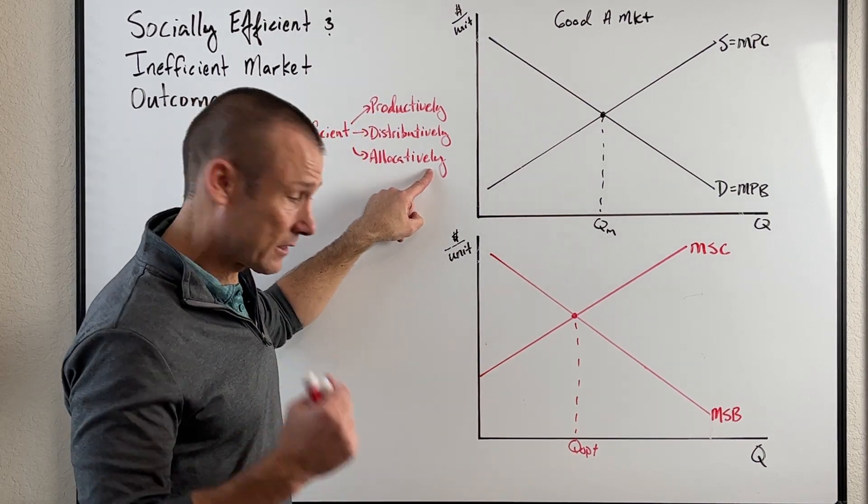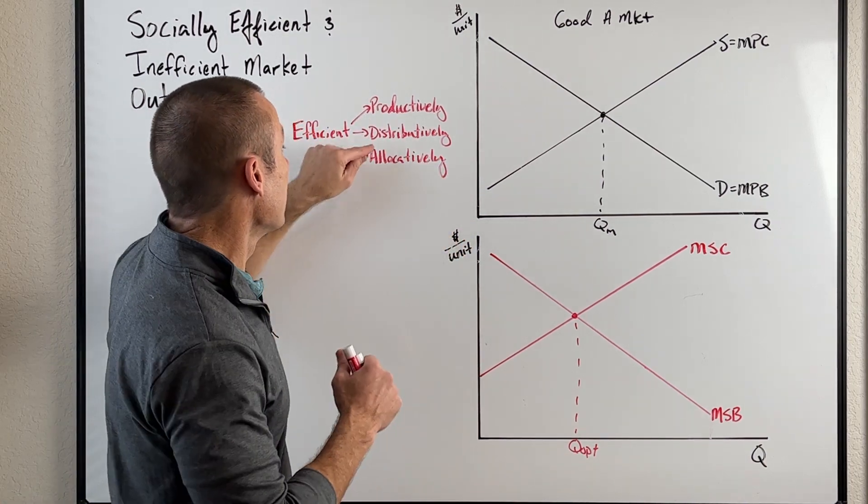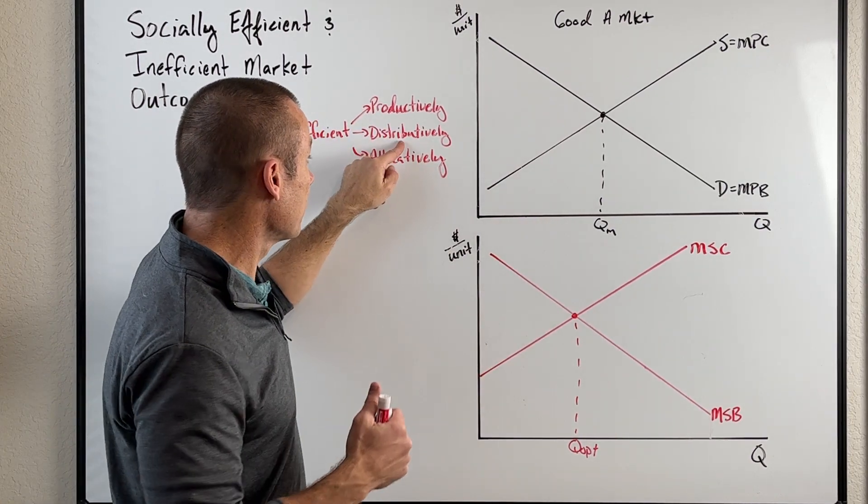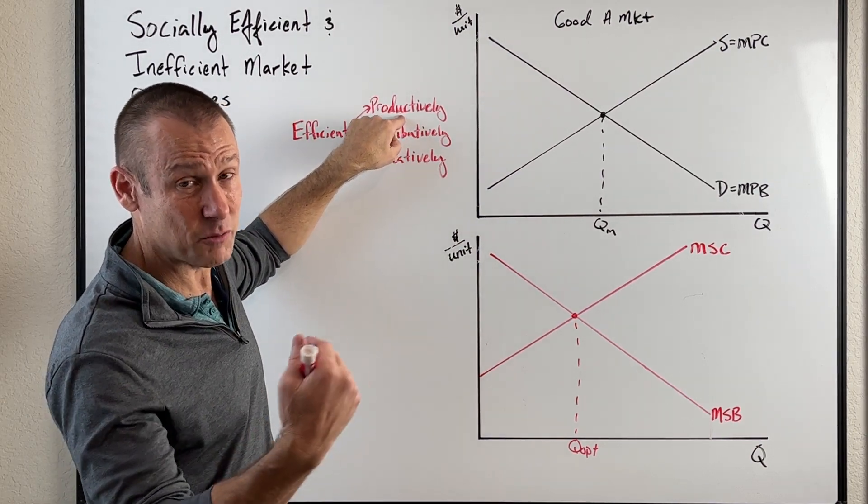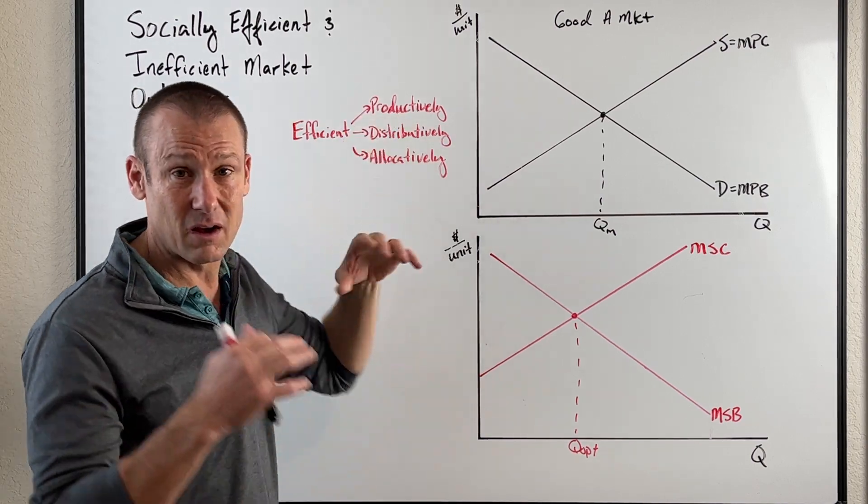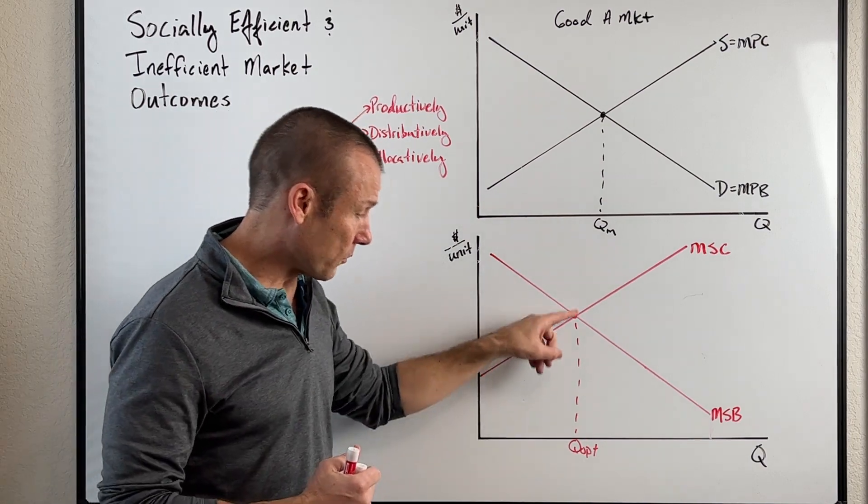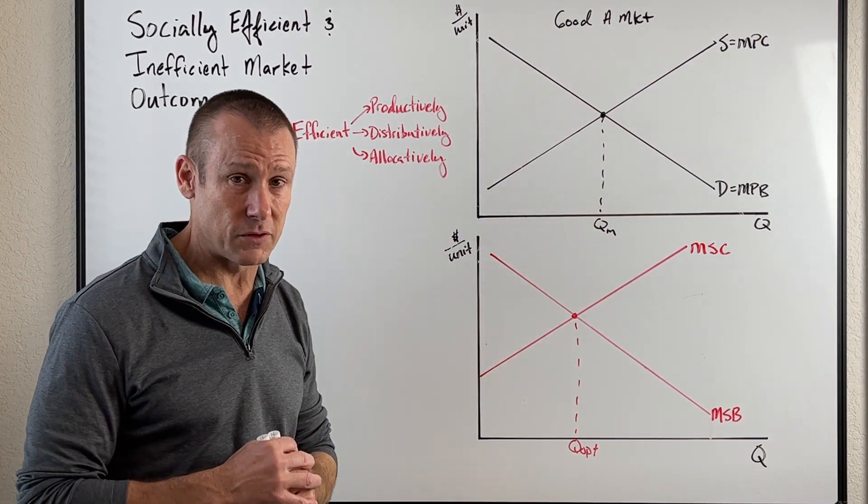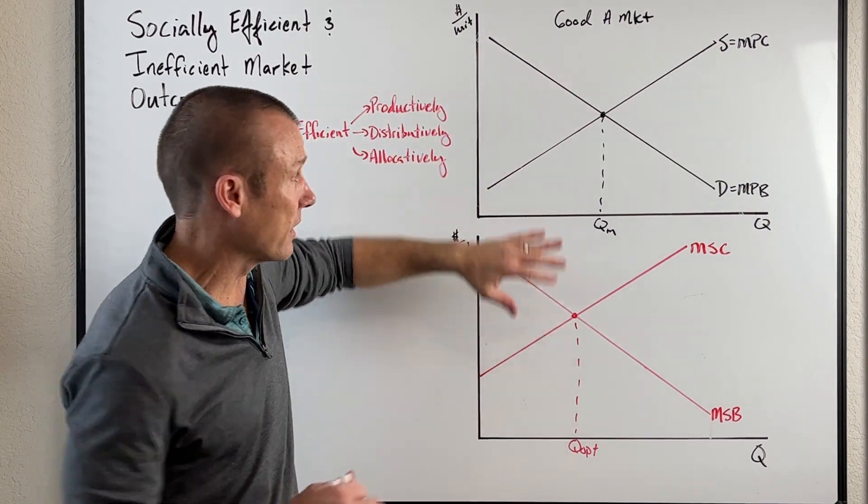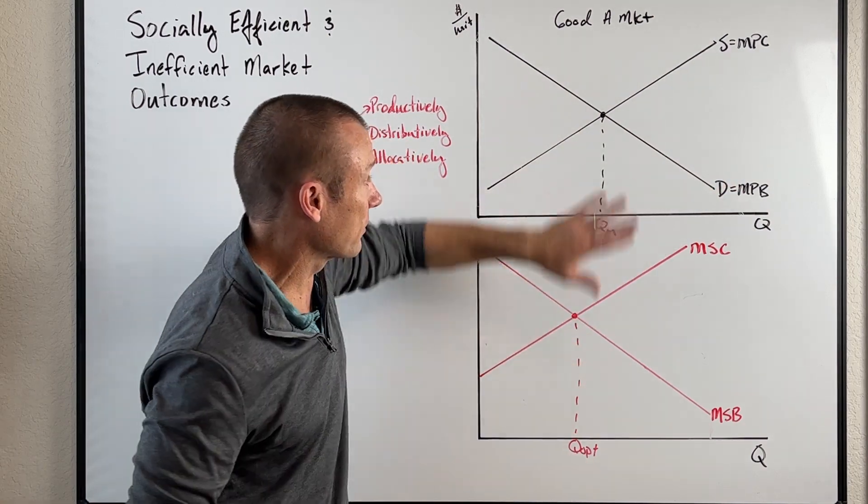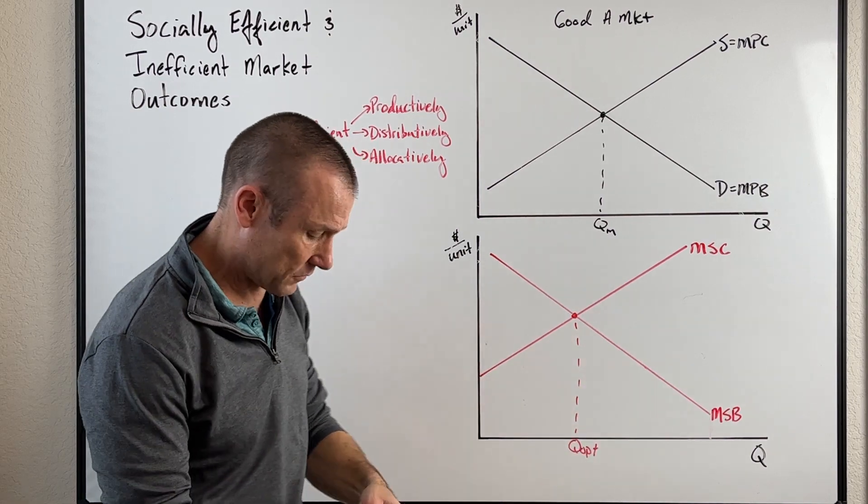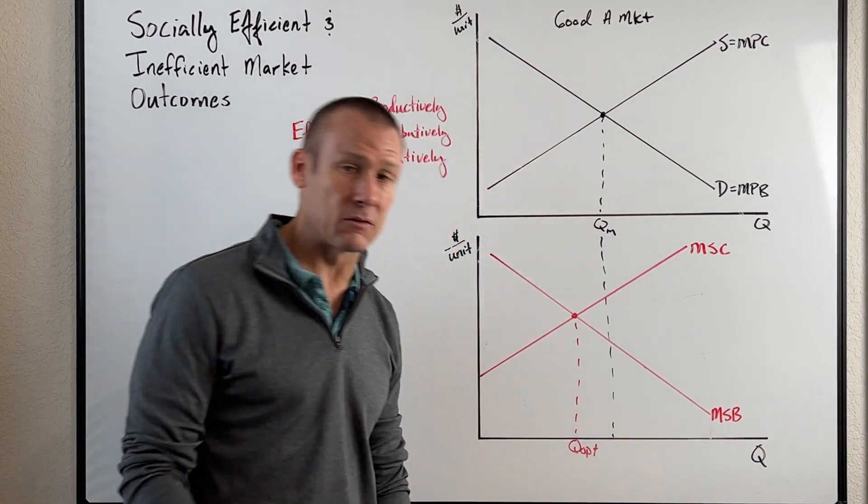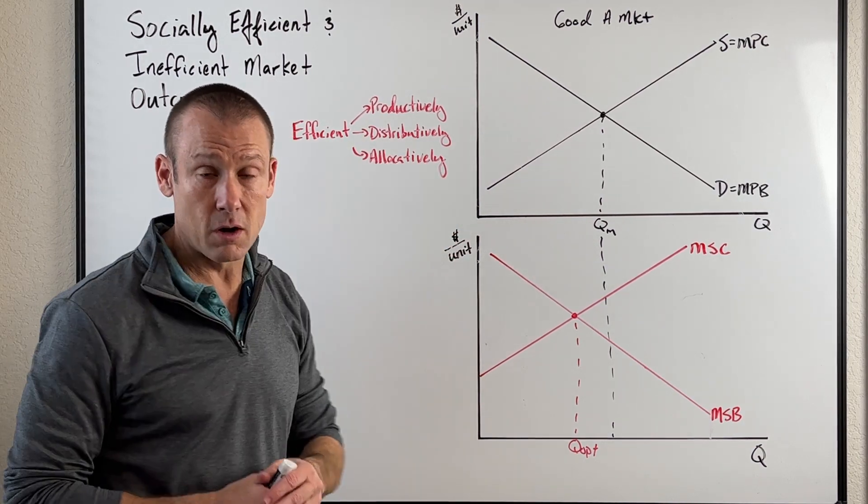Again, it actually is allocatively efficient - it means we're producing the right amount of the good, but we still need to be distributively and productively efficient. But we're going to generally say the market's kind of handling that by determining who gets the good based on price, even though there's that issue of income inequality. And you've got to have costs below the price to even produce it, so only the firms that are productively efficient produce the good. So there's our Q-opt. Supply and demand, they're going to give us our market outcome, but it might not be socially efficient. Imagine both of these are good A. I'm separating out what I call the P curves from the S curves - private cost, private benefit from the societal cost, societal benefit. You can see the market left alone is giving us a socially inefficient outcome. We're over-allocating resources to the production of the good.